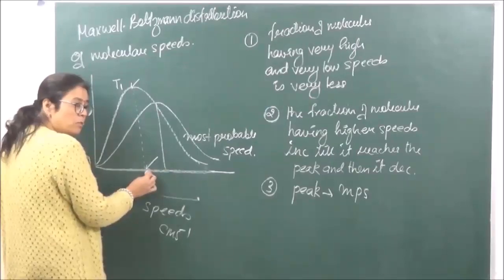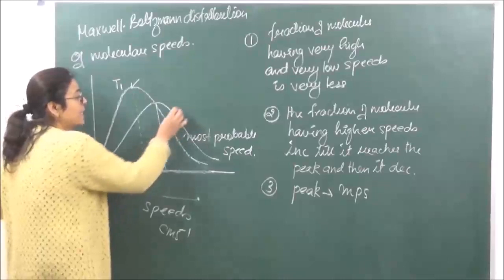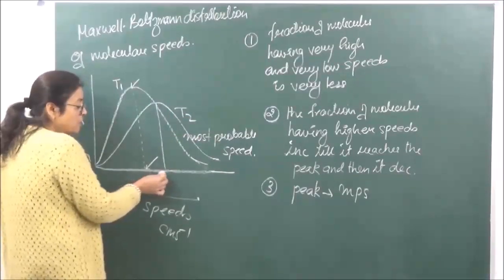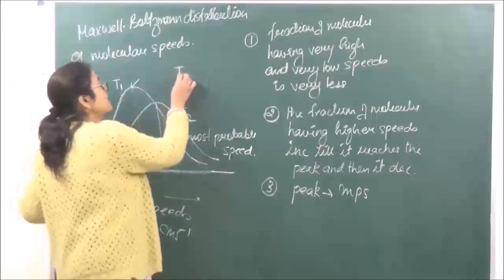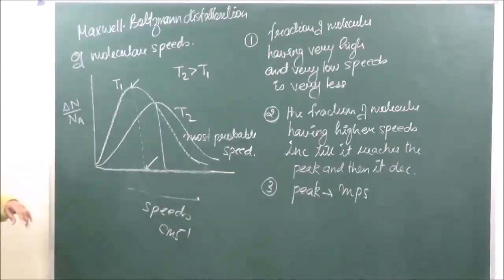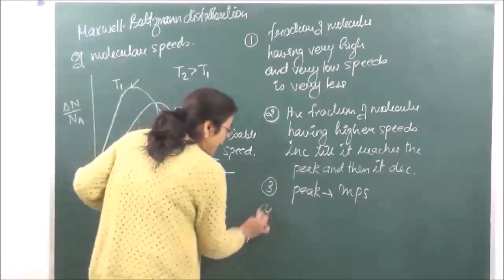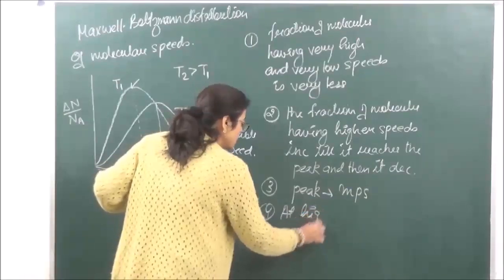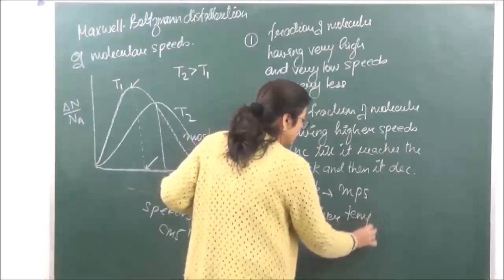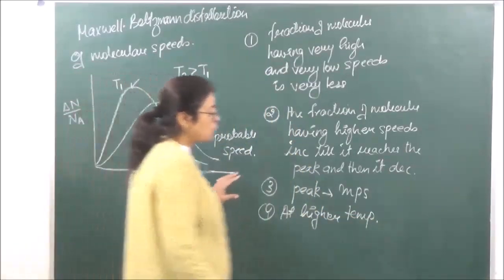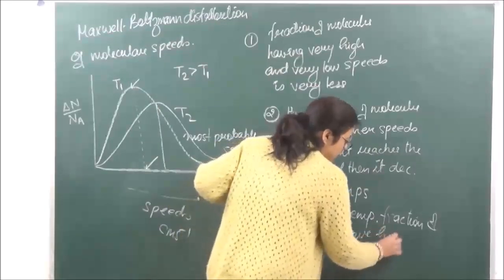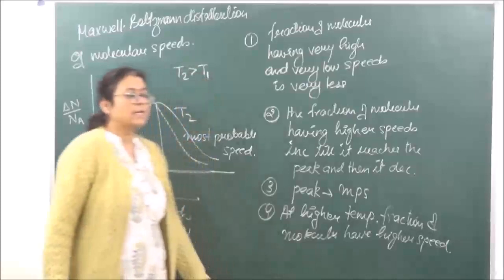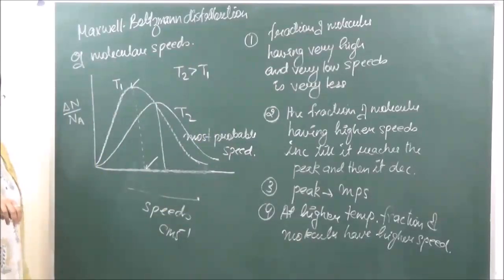What is the effect of temperature on this curve? It was seen that if this is the curve at temperature T1, when the temperature was increased the graph shifts. The most probable speed increases. The fractions having the maximum speed increase on increase in temperature. At T2 greater than T1, at higher temperature the fraction of molecules have higher speeds.